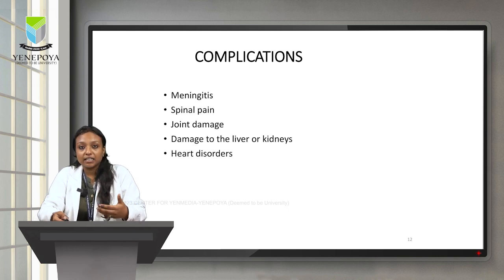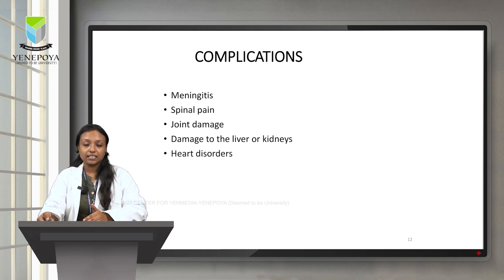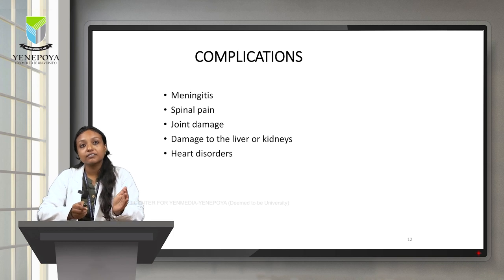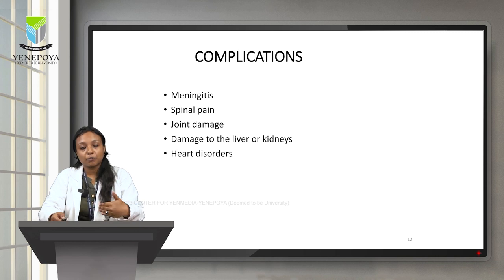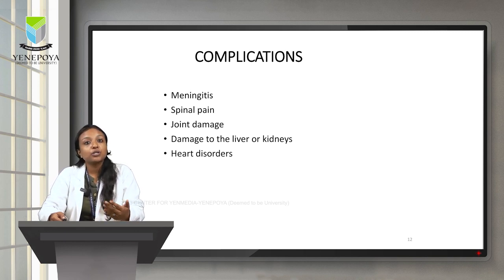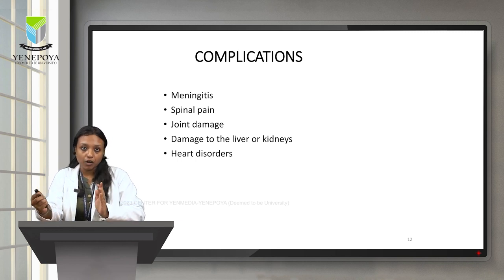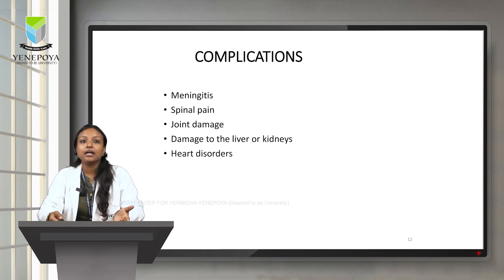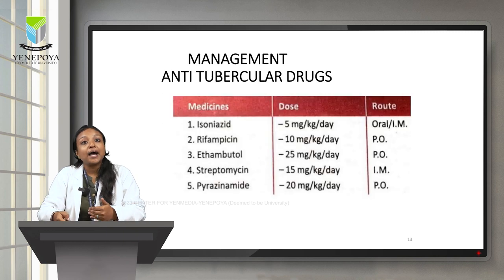Because this is a bacterial infection, at and after the active stage there is a chance for the infection to spread from one organ to another. If it spreads to the meninges it leads to meningitis; spinal TB, joint damage, and damage to the liver or kidneys can occur. If complicated, it may lead to multi-organ failure.